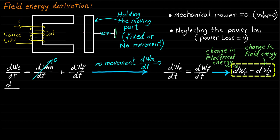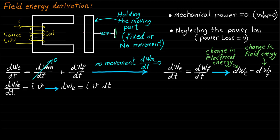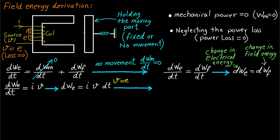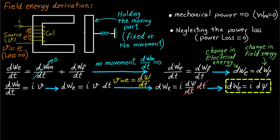The change in electrical energy with respect to time, DWE over DT, represents the electrical power and it is equal to I·V. Note that the input voltage is equal to the back EMF when the loss is neglected. Since we are talking about change of energy or power, we can substitute the applied voltage V by Faraday's law, dψ over DT. Therefore, the change in electrical energy DWE will be equal to I·dψ.